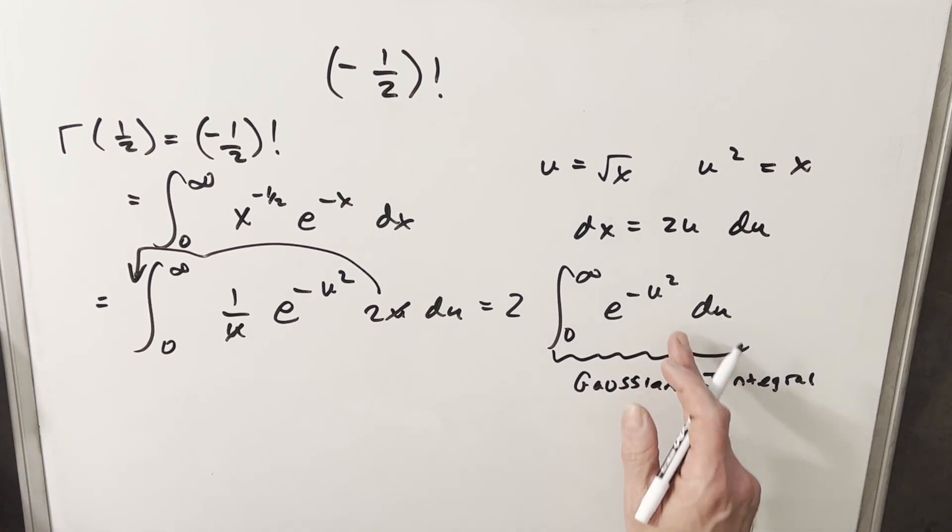Okay, and you may recognize this over here as the Gaussian integral. I've done a number of videos on that. But we have a value for that. We know that this, without proving it, the value of this integral is going to be the square root of pi over 2.